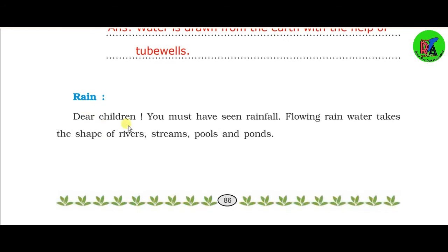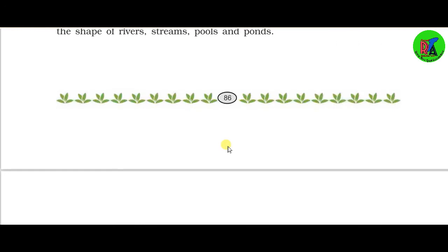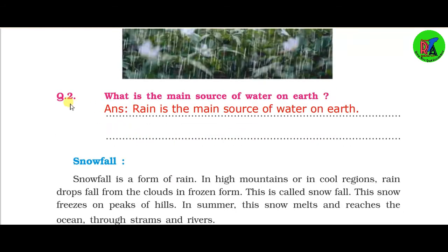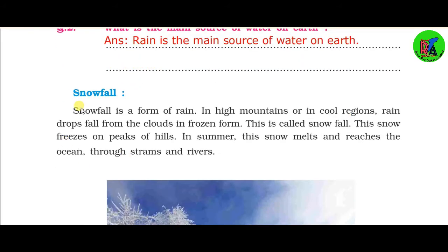Next is rain. Dear children, you must have seen rainfall. Flowing rain water takes the shape of rivers, streams, pools, and ponds. Rain water collects in rivers, streams, and ponds. Your next question is: What is the main source of water on earth? The answer is that rain is the main source of water on earth.